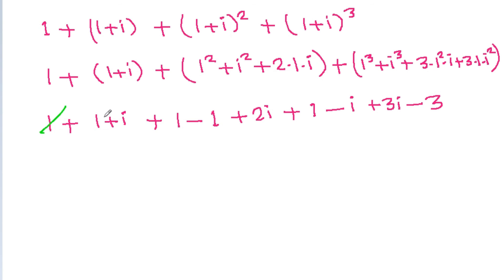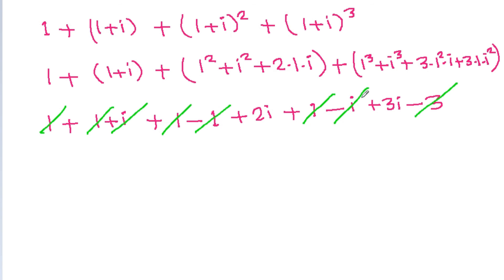The 3, 1, and minus 3 cancel out, minus 1 and 1 cancel, and iota and minus iota also cancel. So we are left with 2*iota plus 3*iota, which equals 5*iota. So 5*iota is the required value.